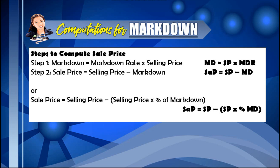So how do we compute for markdown? The steps to compute for the sale price: first, markdown is equal to markdown rate times the selling price. After this, you need to solve for the sale price, which is selling price minus markdown. Or, to combine these two steps, we have: sale price equals selling price minus the product of selling price and the percent of the markdown.